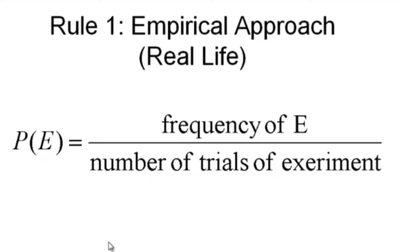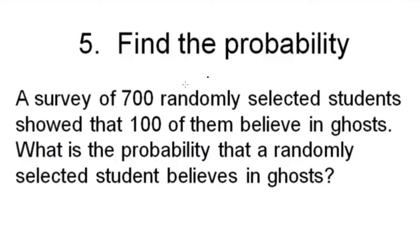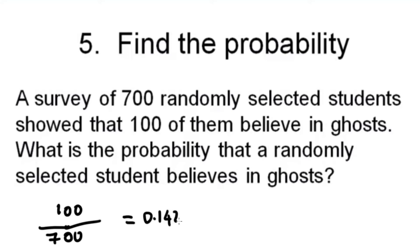Rule 1, the empirical approach: P(E) equals the frequency of E divided by the number of trials of the experiment. Example: a survey of 700 randomly selected students showed that 100 of them believe in ghosts. So 100 divided by 700 equals 0.1429, or approximately 14.29%. That is the probability that a randomly selected student believes in ghosts.